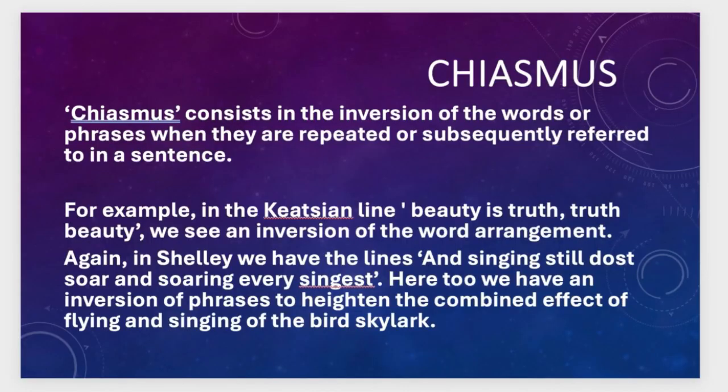Our final figure of speech is chiasmus, which is rather easily detectable. It consists in the inversion of words or phrases when they are repeated or subsequently referred to in a sentence. For example, in the Keatsian line 'beauty is truth, truth beauty,' we see an inversion of the word arrangement. In Shelley, 'and singing still does soar, and soaring ever singest' — an inversion of phrases that heightens the combined effect of the flying and singing of the bird.